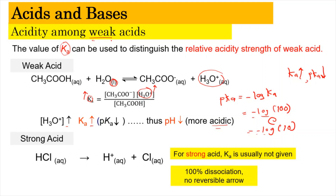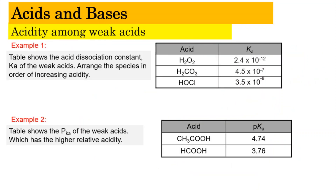Strong acid has 100% dissociation and it doesn't have any reversible arrow. Now we're going to look into an example of how we can apply the concept of Ka in determining the acidity among the weak acids.